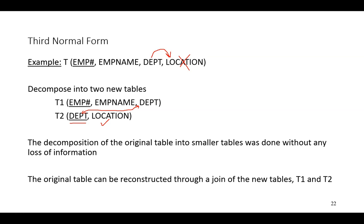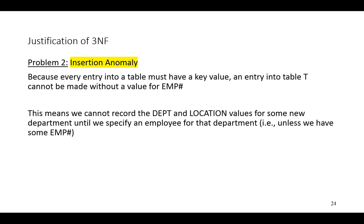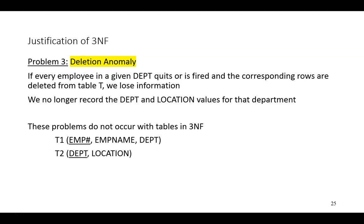We also avoid possible anomalies. If we retain the transitive dependency, first there's an update anomaly: if 50 employees are in a given department, the location of the department would be recorded 50 times. An insertion anomaly: an entry in table T cannot be made without a value for employee number, so we could not record information about a department and its location unless we had an employee assigned to that department. A deletion anomaly: if every employee in a given department quits, the corresponding rows are deleted and we lose information about departments and their locations. But we overcome this by eliminating the transitive dependency and creating the two tables — it is a non-loss decomposition.